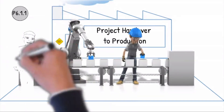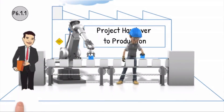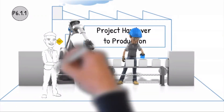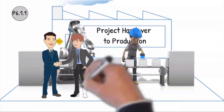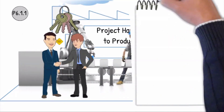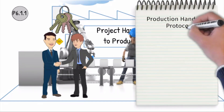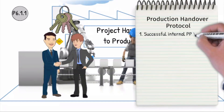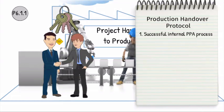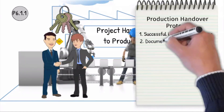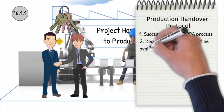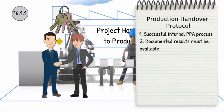The project manager has to transfer the serial production to the operational manager. The responsibilities for the entire handover process are regulated and acknowledged. A successful production process and product release (PPA) must take place before the first production shipment. All documented results must be available.